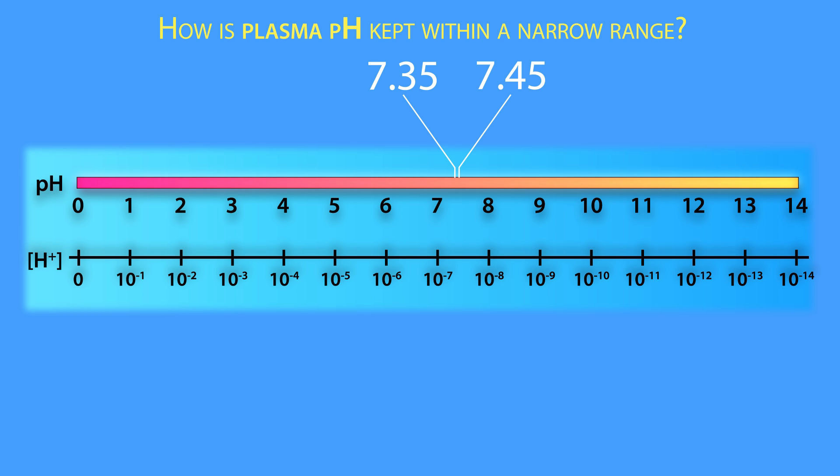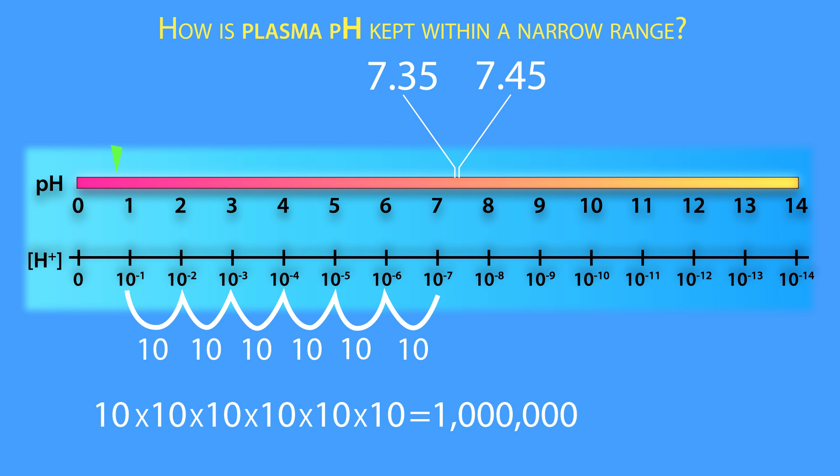This is especially important to know because our bodies constantly produce enough acid to make the plasma pH less than 1, which, if you remember correctly, equals a hydrogen ion concentration that is about a million times more concentrated than a plasma pH of 7.4.